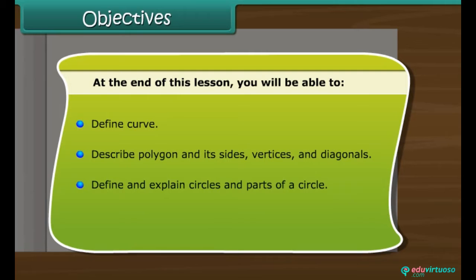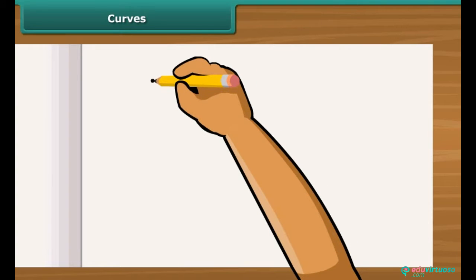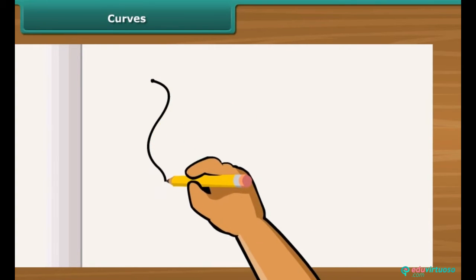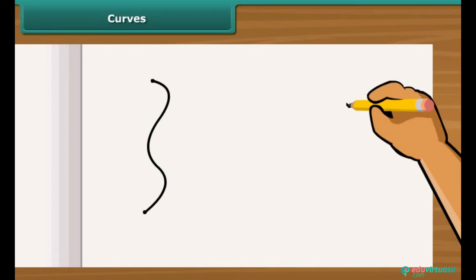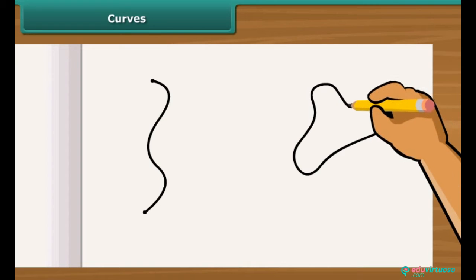Look at the two figures drawn by Sam. In the first curve, it starts from a point and finishes at another point. But in second curve, it starts and finishes at the same point.